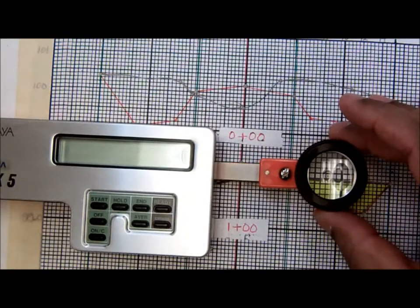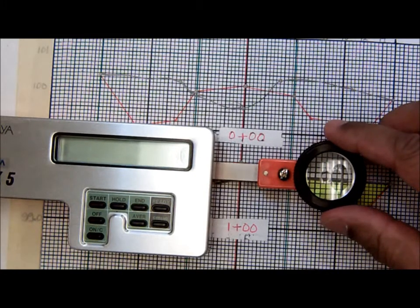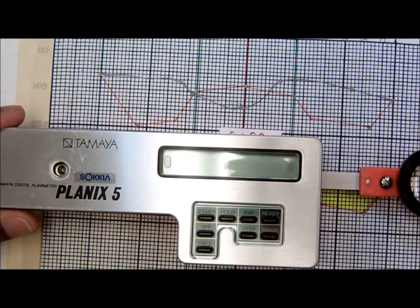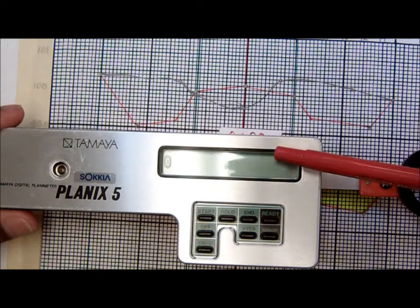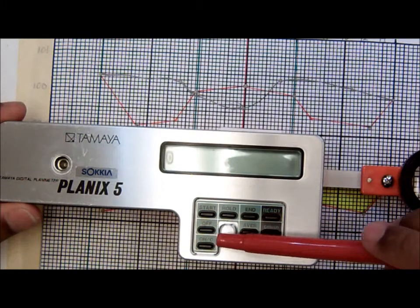This is the planimeter. It has a lens and in the lens there is a circle with a dot in it and that's what we're going to use to traverse our area. We have a display right here where we will see the numbers, and we have the control panel right here.